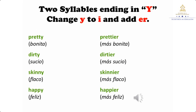We have our second rule: for two syllables ending in 'y', change the 'y' to 'i' and add 'er'. Para cuando tengamos una palabra con dos sílabas que termine en 'y', vamos a cambiar esa 'y' por 'i' y le vamos a agregar 'er'. Miren nuestro ejemplo: pretty. Tiene dos sílabas y termina en 'y', entonces esa 'y' la cambiamos por 'i' y le agregamos 'er', quedando prettier.